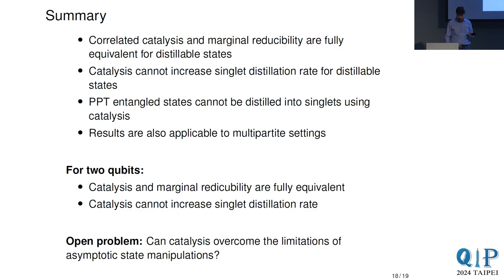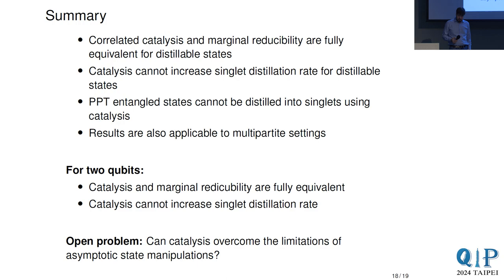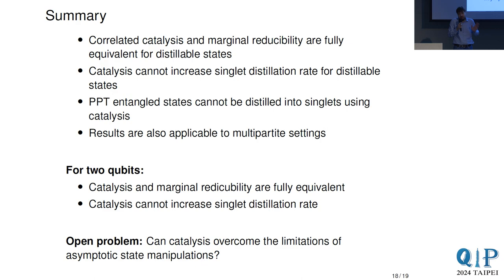Question: if we restrict the amount of correlation between the correlated catalyst and also in marginal reducibility, are they still equivalent? Speaker: You mean we don't ask the correlations to be close to zero but restrict them to some constant amount? We didn't think about that. The answer probably depends on what measure you use — mutual information or trace distance — and the answer likely depends on which measure you take.